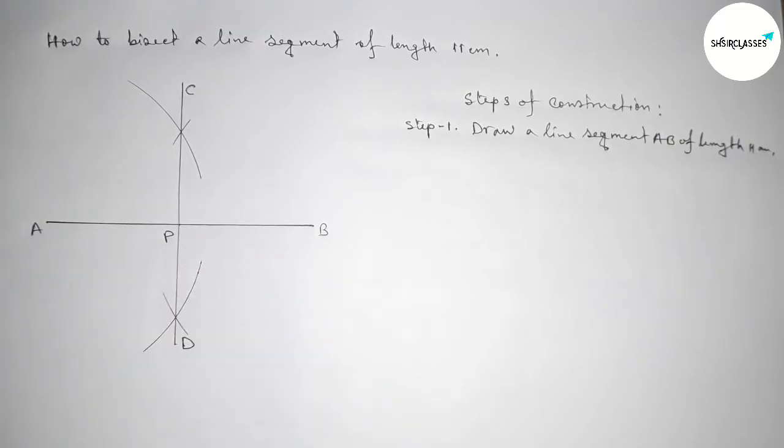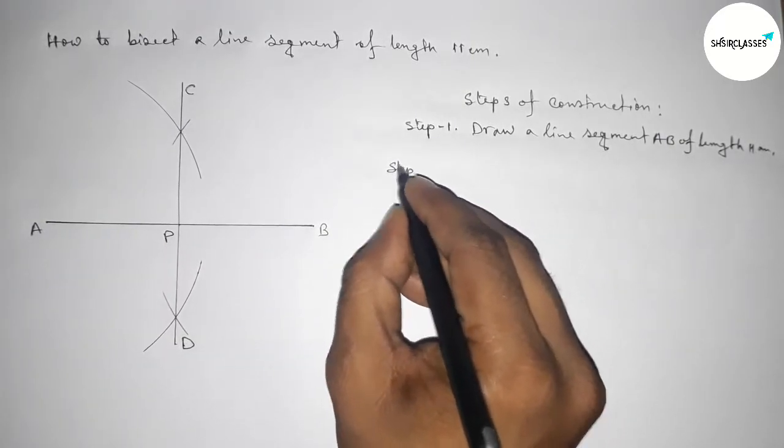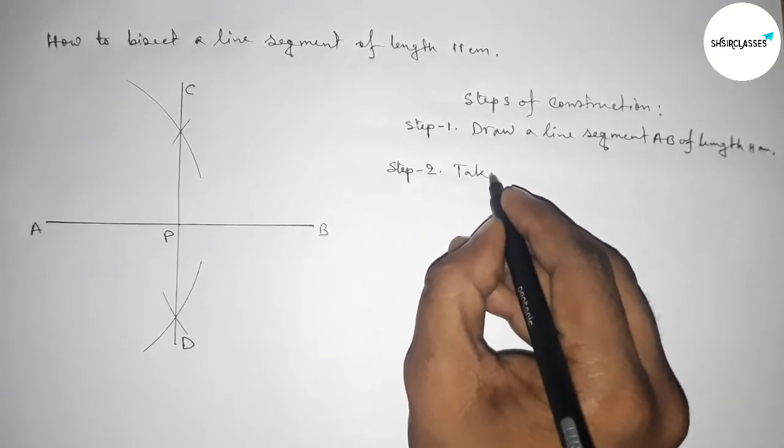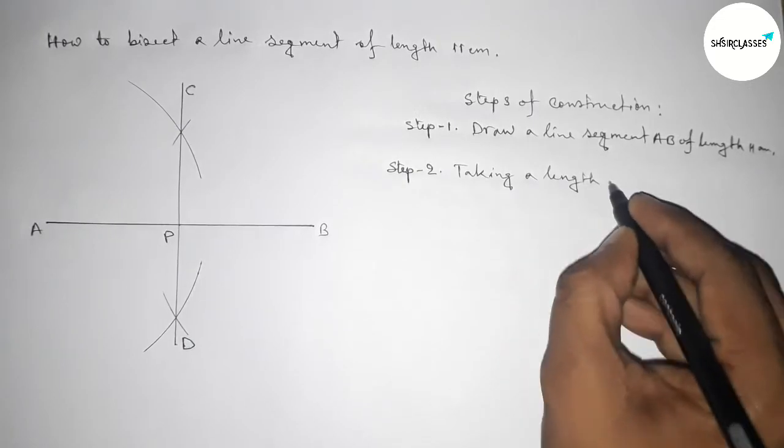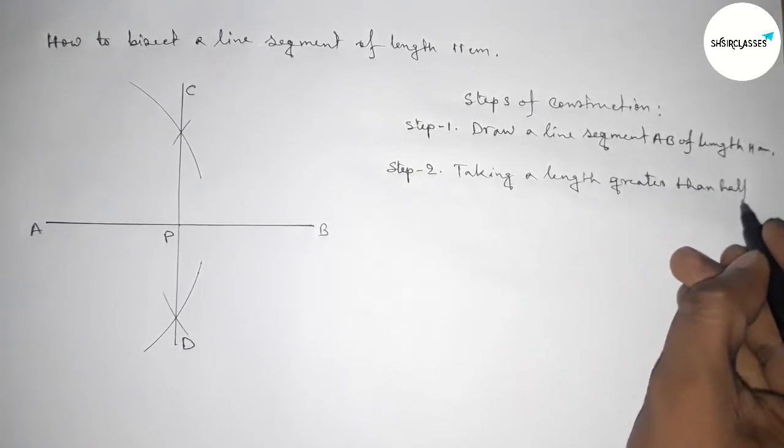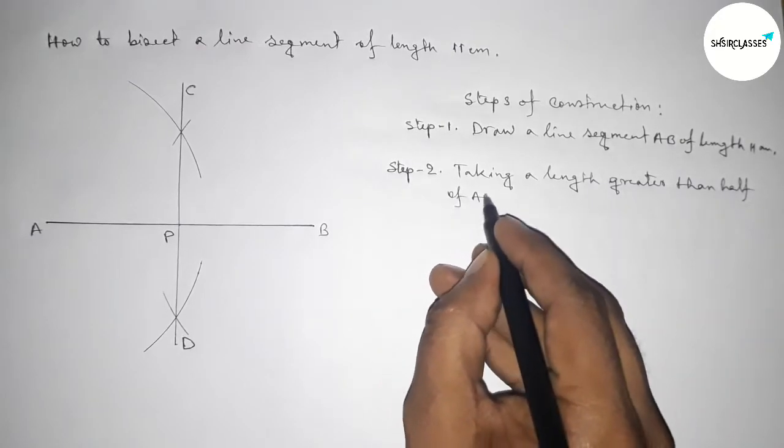So now step number two. In step two, first taking a length greater than half of AB by using compass.